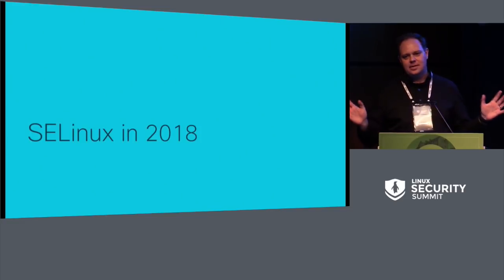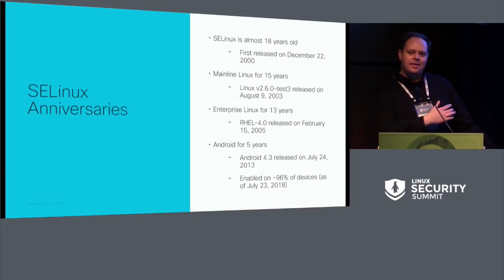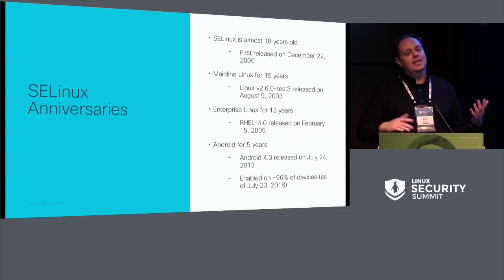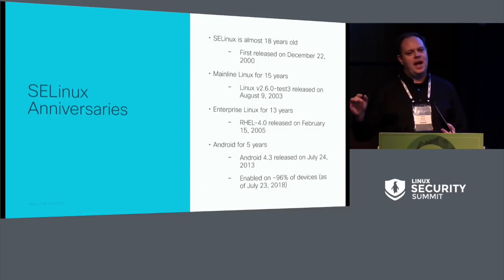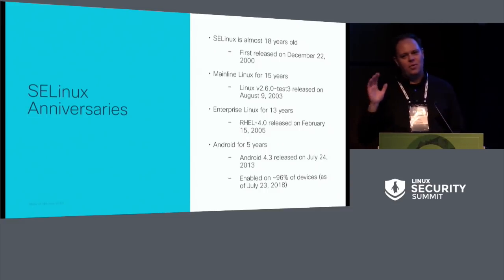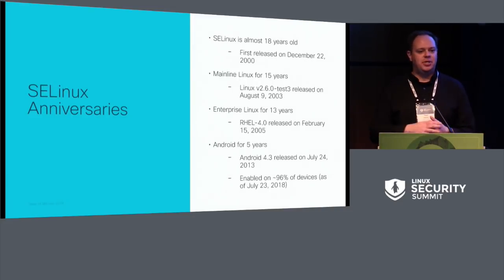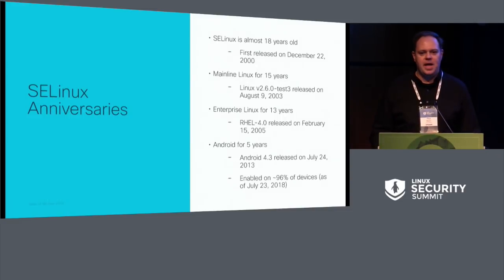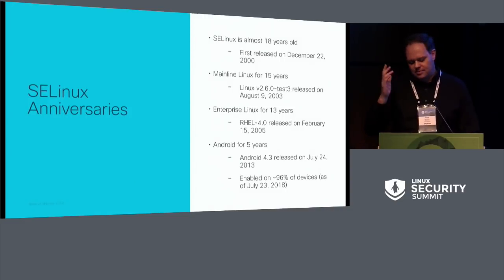We've got 10 minutes left, so this is SELinux in 2018. First, a quick anniversary - SELinux is pretty mature, it's been around for a long time. The first release was back in 2000, so we're almost 18 years old. We've been in mainline for 15 years. It's been shipping as part of an enterprise Linux distribution for 13 years, and it's been in Android for five. The general thing is roughly two billion devices at this point, and that's just for Android - that's not counting all the servers and appliances. So there's billions and billions served.